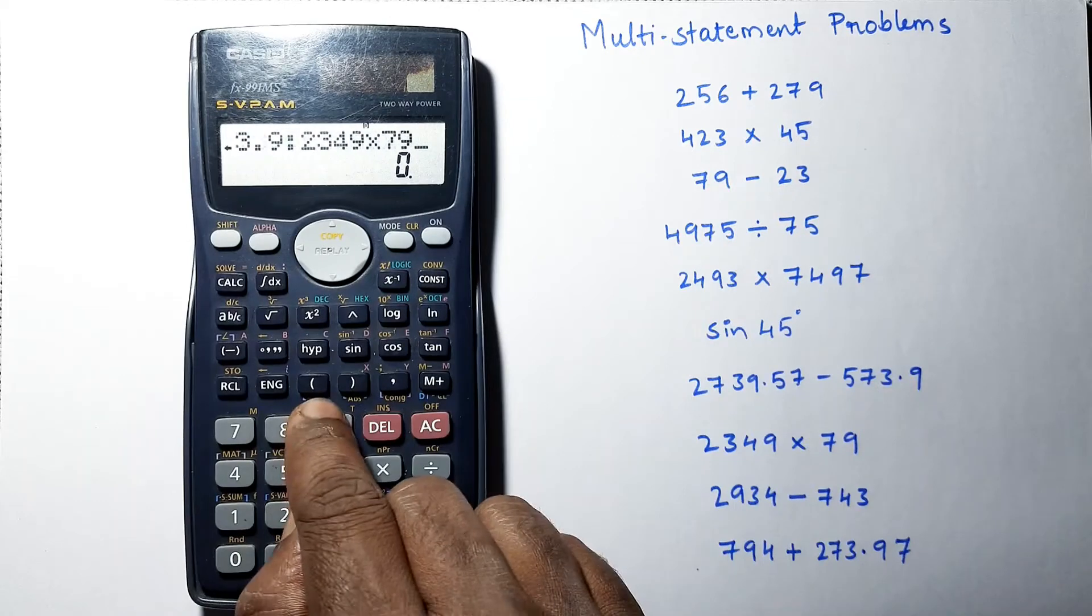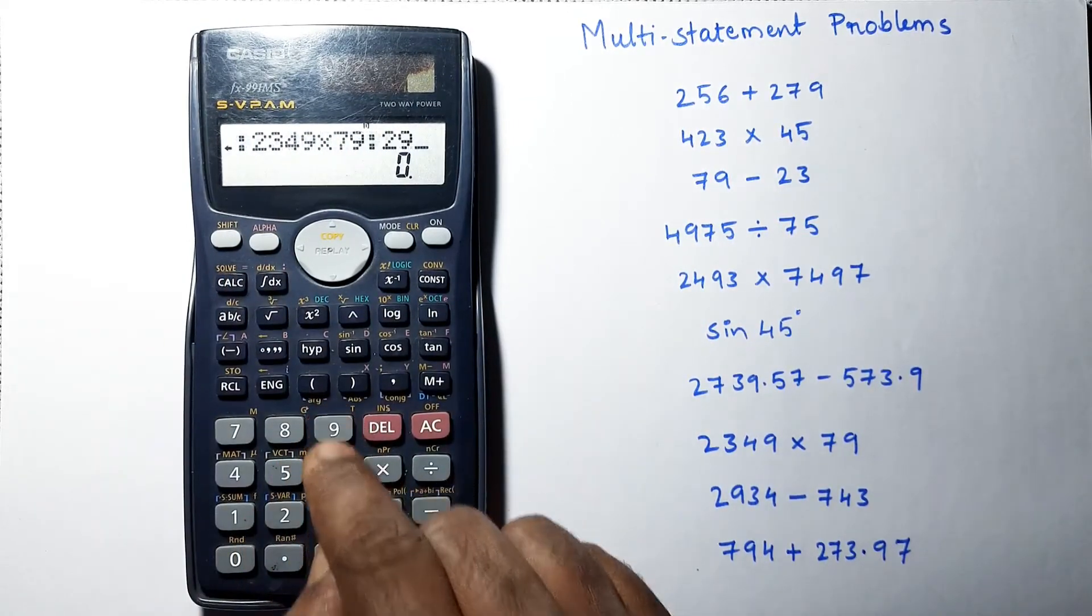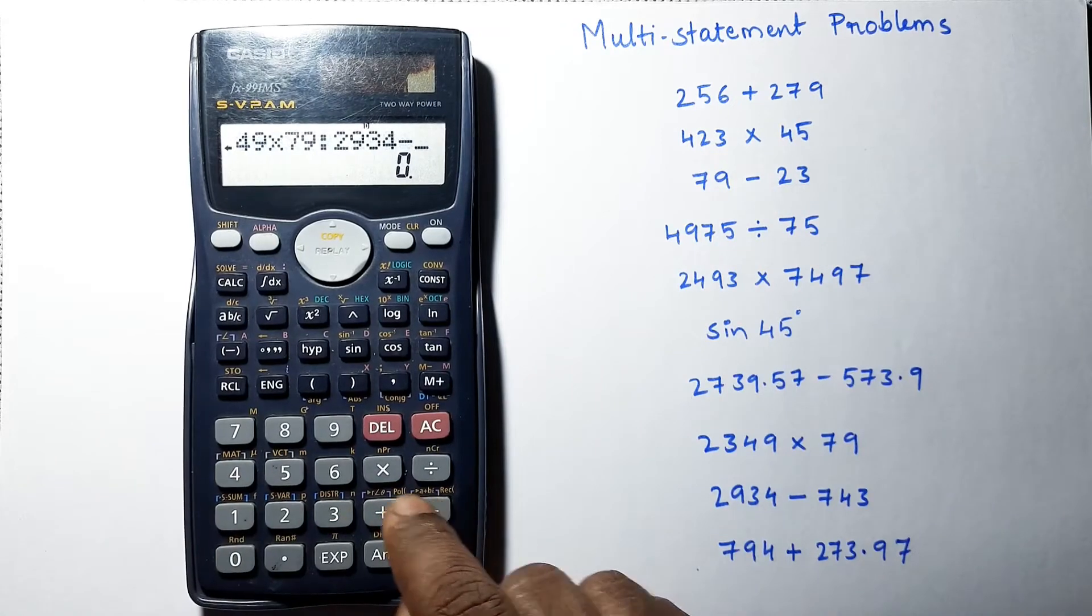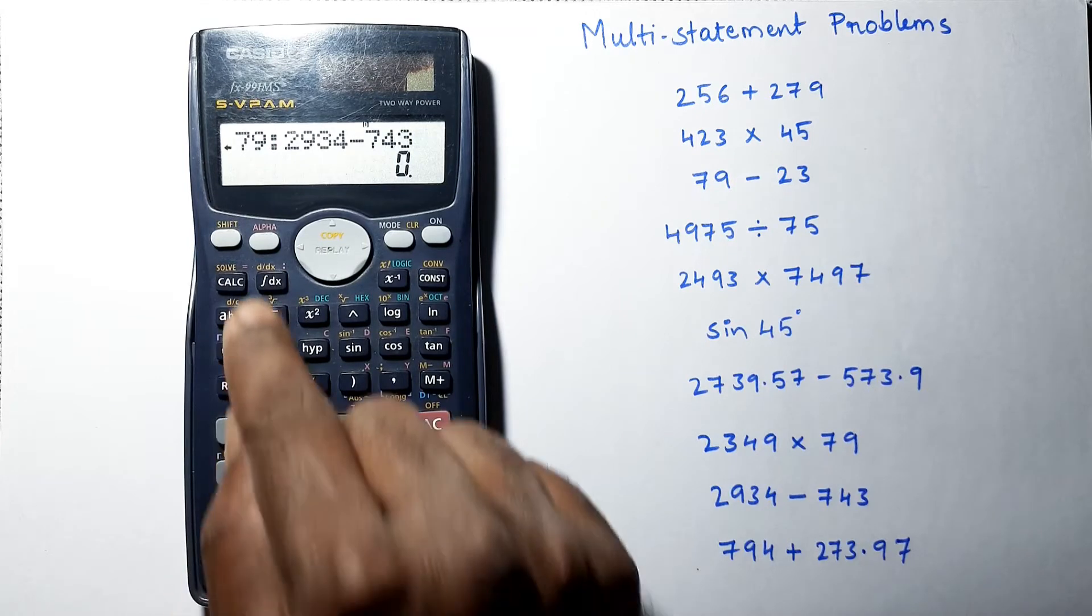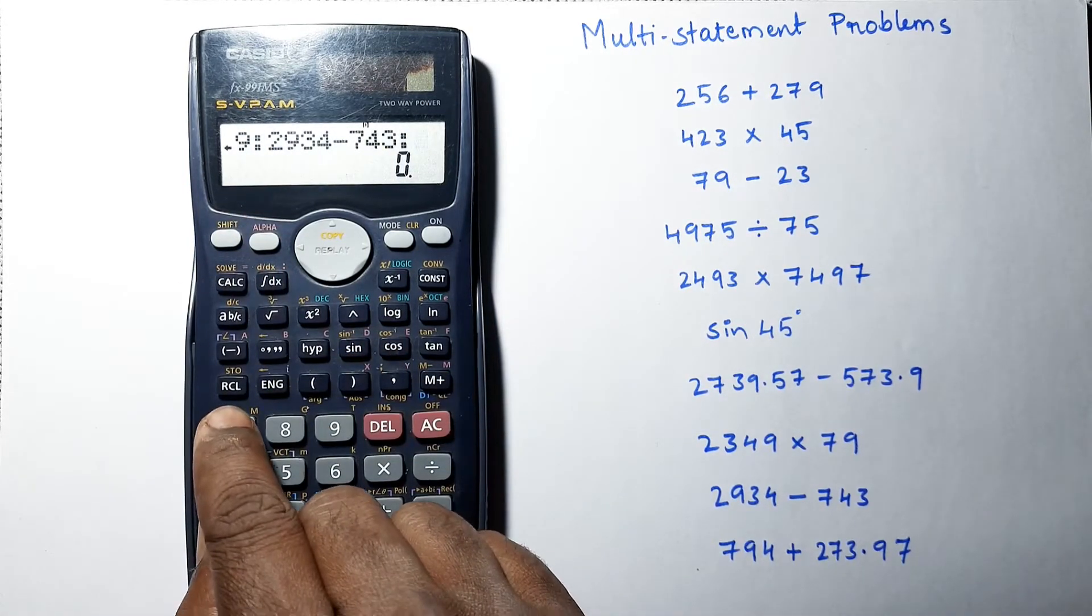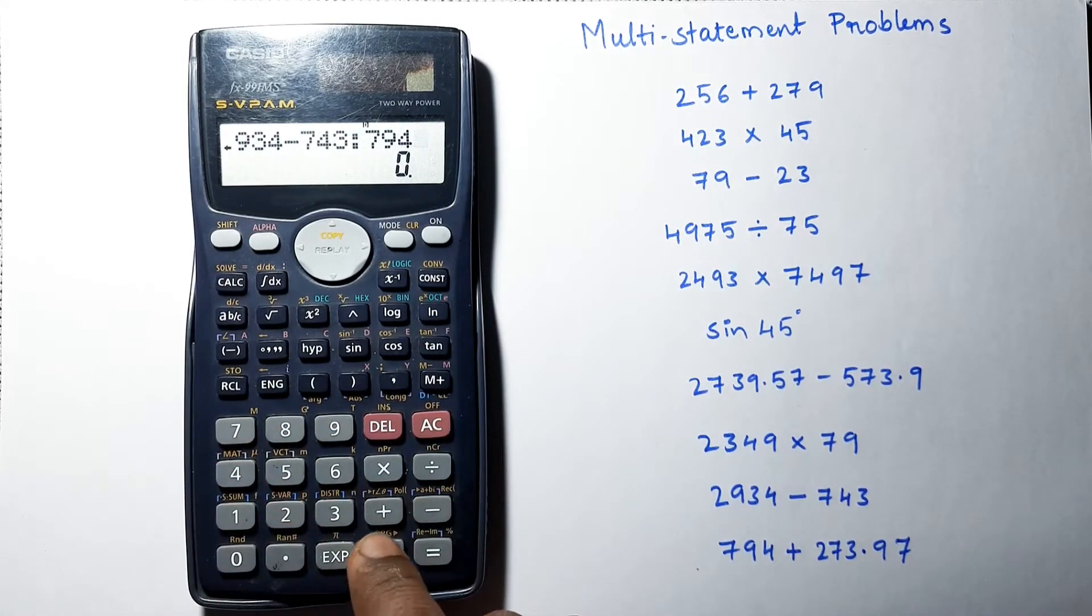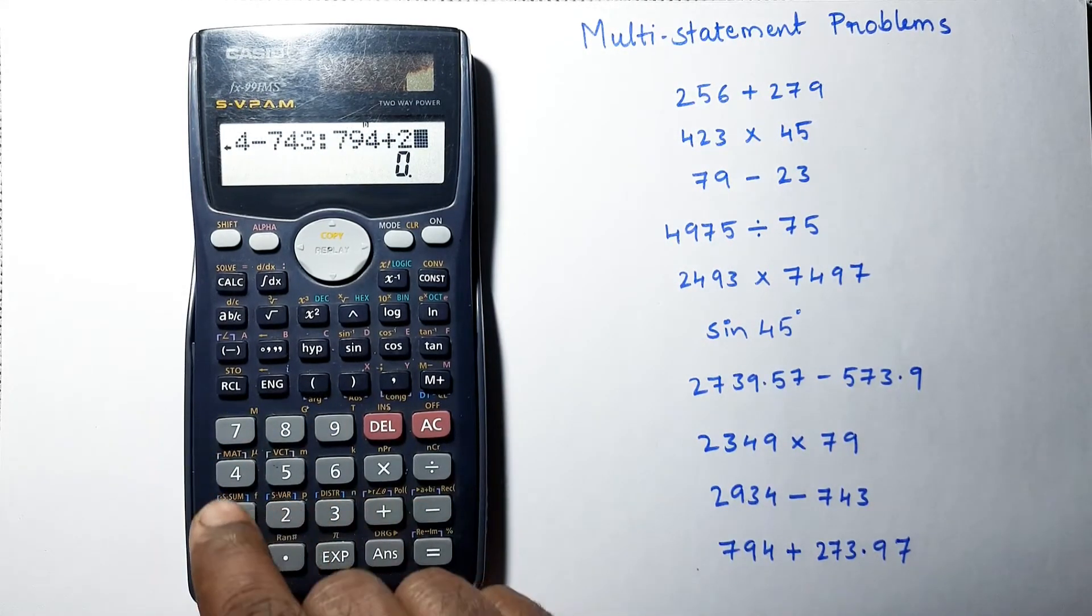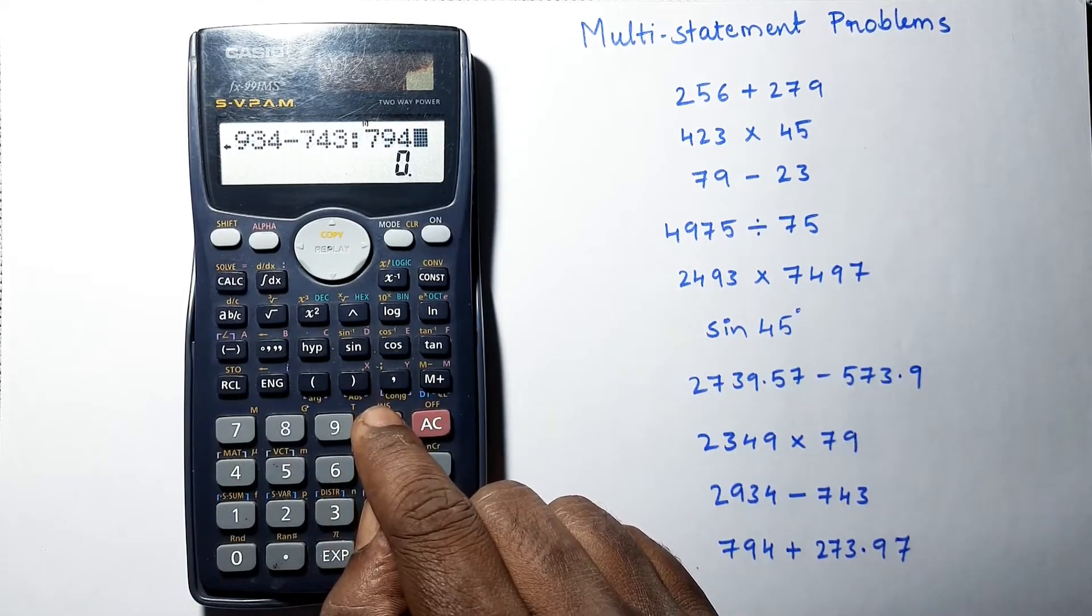Colon, 2934 minus 743, again press colon, 794 plus 270. The memory is over, let's delete the last problem. Let's solve these nine problems.